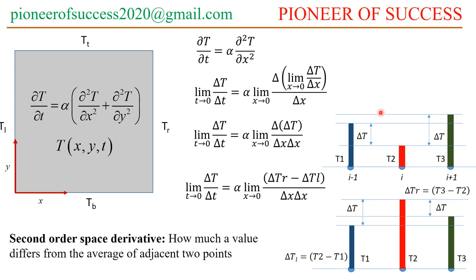Two different situations have been taken. In the first situation, the temperature at point 2 is higher than both adjacent points. In the second situation, the temperature at the middle point is lower than both adjacent points. These are the two different scenarios.